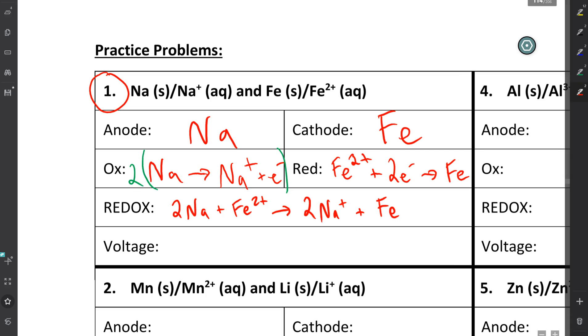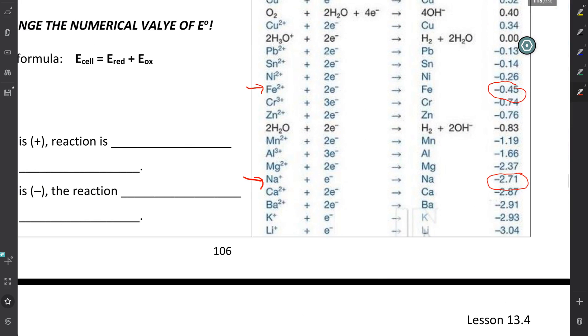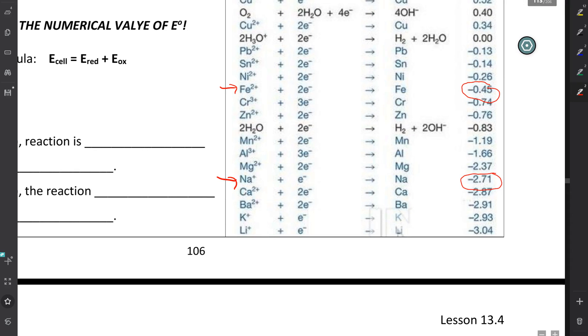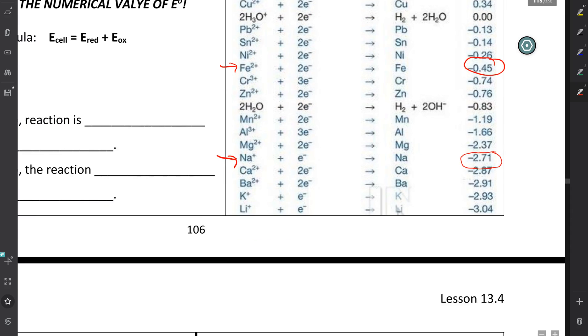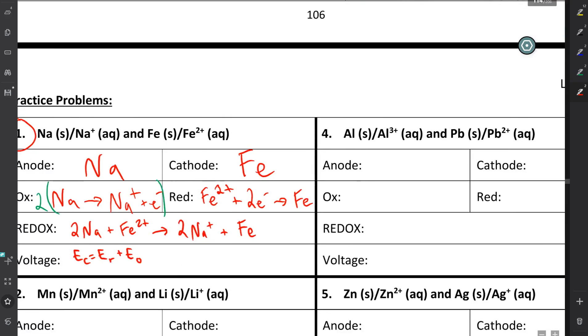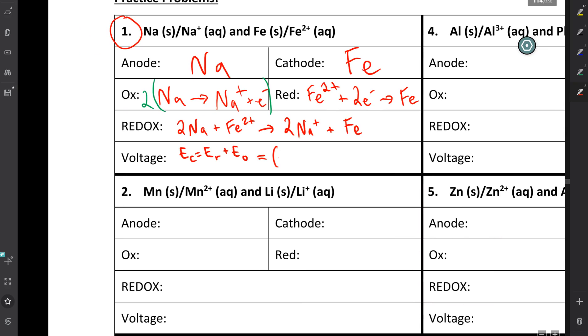All right, almost there. For voltage, we know the voltage of the cell is equal to the voltage of reduction plus the voltage from oxidation. And honestly, if you just want to write this as E equals R plus O, I'm completely fine with that. Just something communicating that you know where the numbers have come from. Let's go back to the chart. So we know that the reduction of iron 2+ ions is negative 0.45 volts. I know that the oxidation, or I should say, the reduction of sodium is negative 2.71 volts. So if I reverse this for the oxidation of sodium, I end up with positive 2.71 volts. So this is going to be equal to negative 0.45 volts plus 2.71 volts.